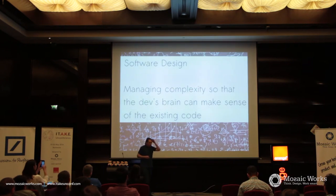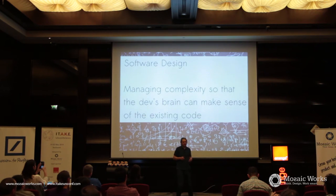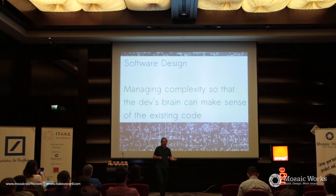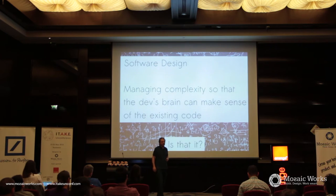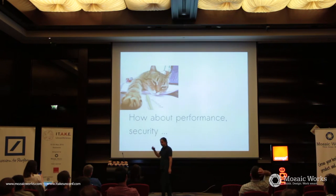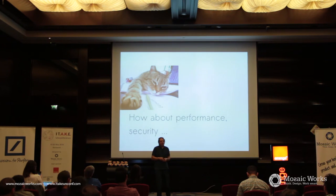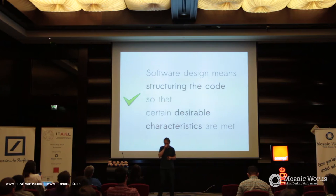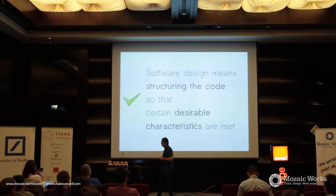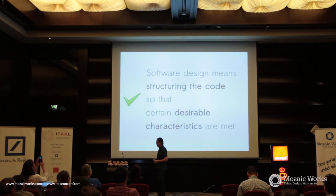So if we go back to the question — what is software design? Maybe we can say we try to manage complexity so that we can make sense of the code. But that's probably not all of it, because there are other constraints we care about, like performance and security. So my first definition is that software design is about structuring the code so that we have certain desirable characteristics. But then which are these characteristics? That's the next point.